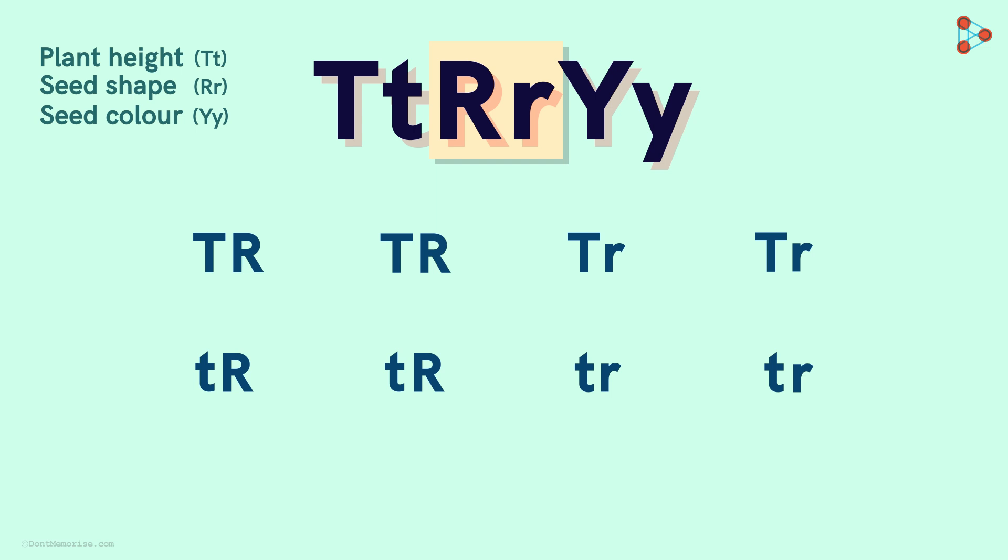Now comes the last allele set! Any idea how will this be assorted? Well, it's quite simple! The last set will be written in single alternate fashion! That is Y in capital followed by y in lower case!